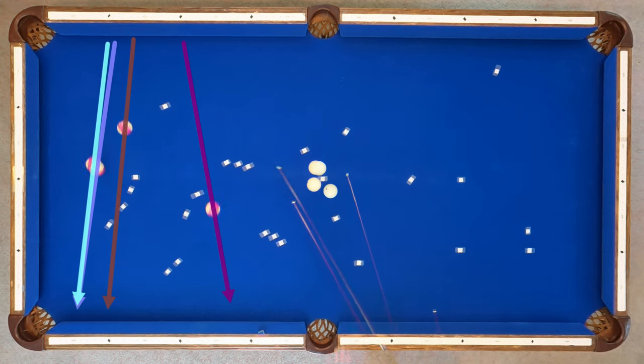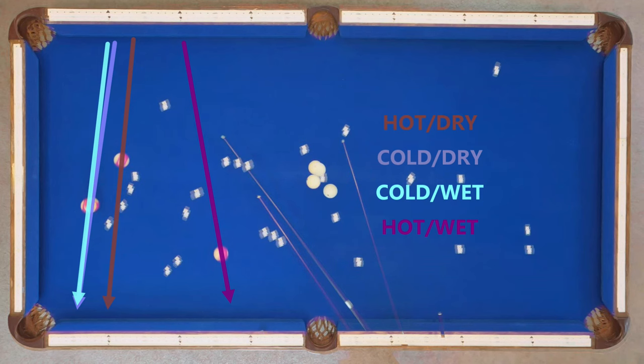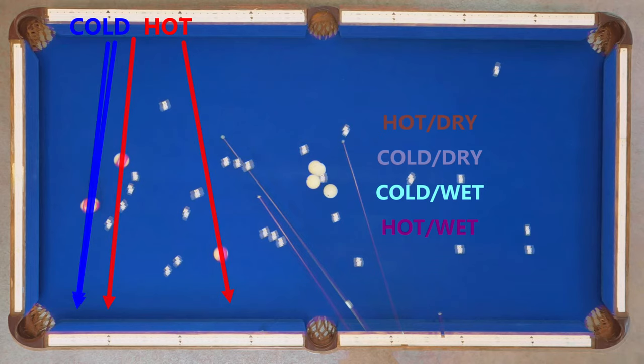Since the trend in the first video was that tables with the same humidity react similarly, I was surprised that the trend here for a second time was temperature related. Both cold conditions resulted in a more natural rail action, but the hot conditions ran shorter and even reversed direction.